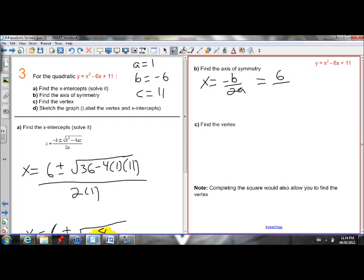So negative, negative 6, which is just 6, over 2 times 1, a is 1. So 6 over 2, which is 3.